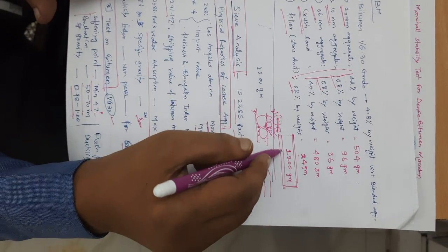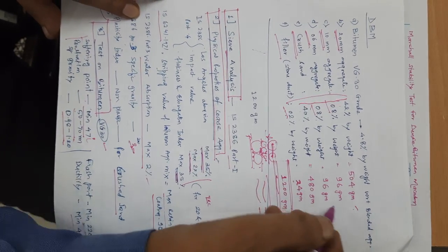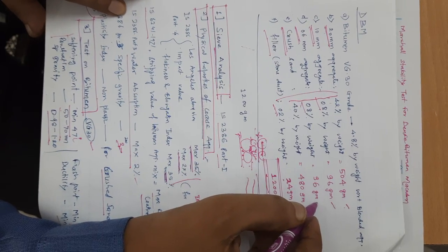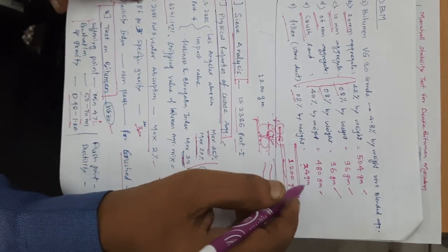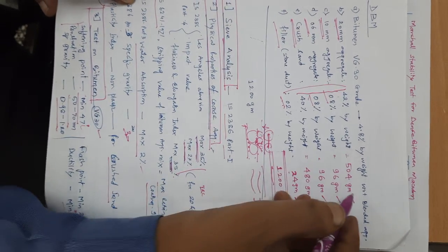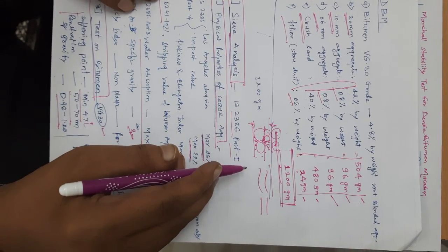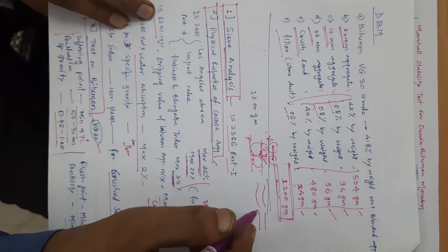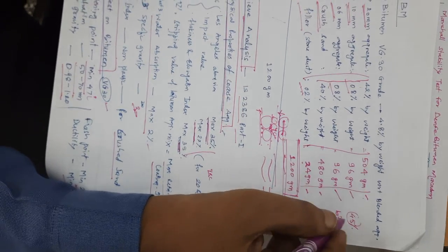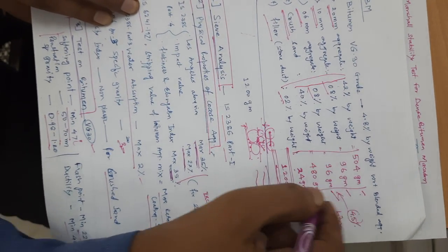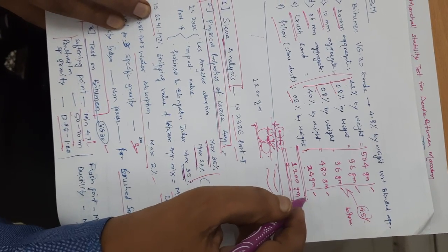For taking a 1200 gram sample for preparing one sample, I am going to use 504 grams of 20 mm aggregate, 96 grams of 10 mm size, 96 grams of 6 mm aggregate, 480 grams of crushed sand, and 24 grams of filler sand. This sample should be prepared with 4.5% bitumen content — we are going to take 4.5% as the bitumen content added to this 1200 gram weight.